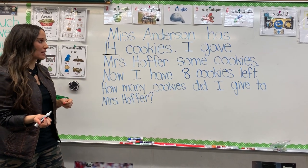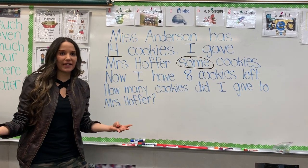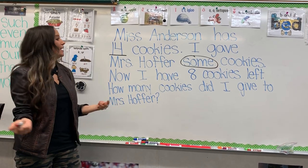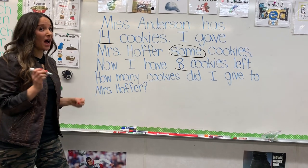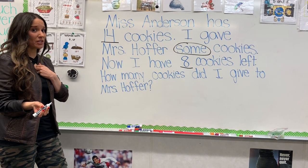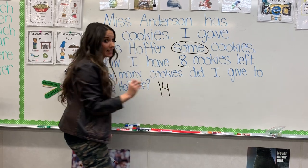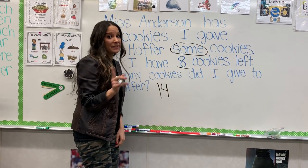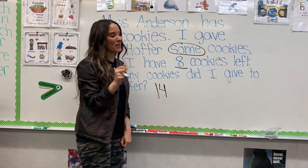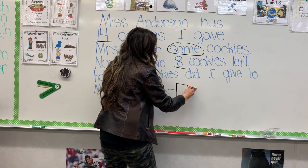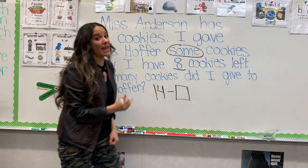So, 14 cookies. I gave Mrs. Hopper some cookies — that's the dun-dun-dun, the mystery box, that's what we don't know. And now I have eight cookies left. So I'm going to do an equation. We're subtracting, and we've got our mystery box because we don't know how many I gave away — that's what we've got to find out. I have eight left.